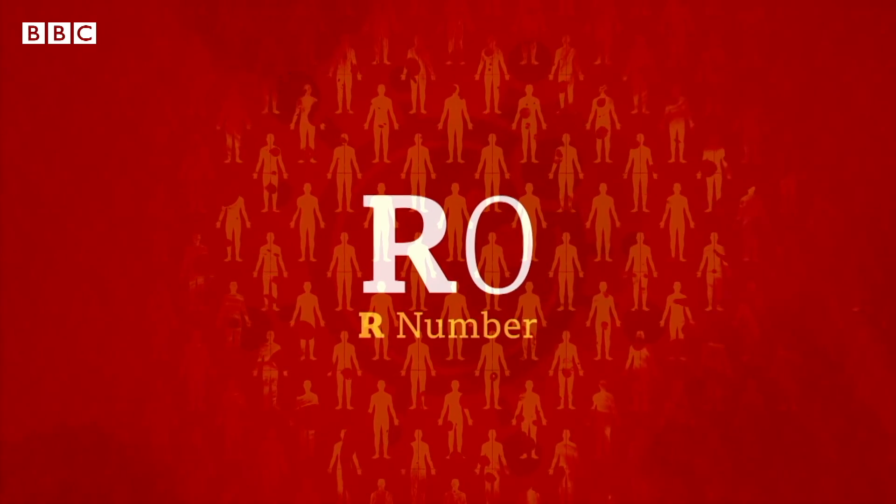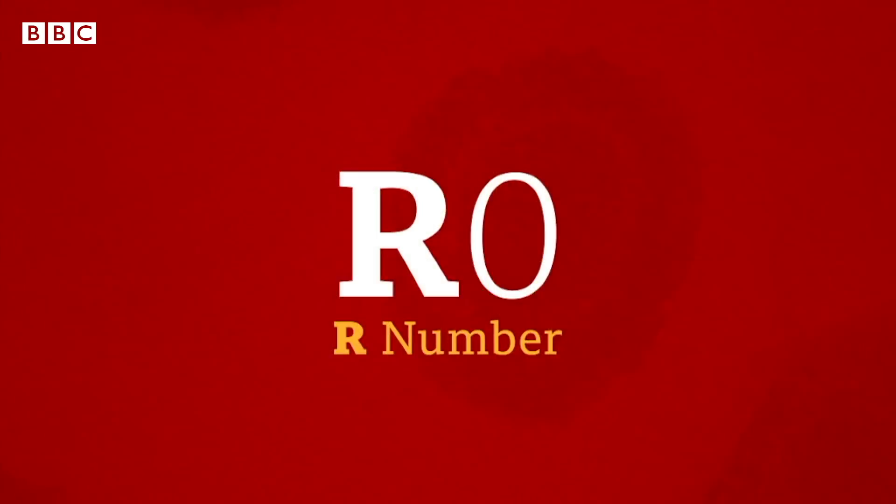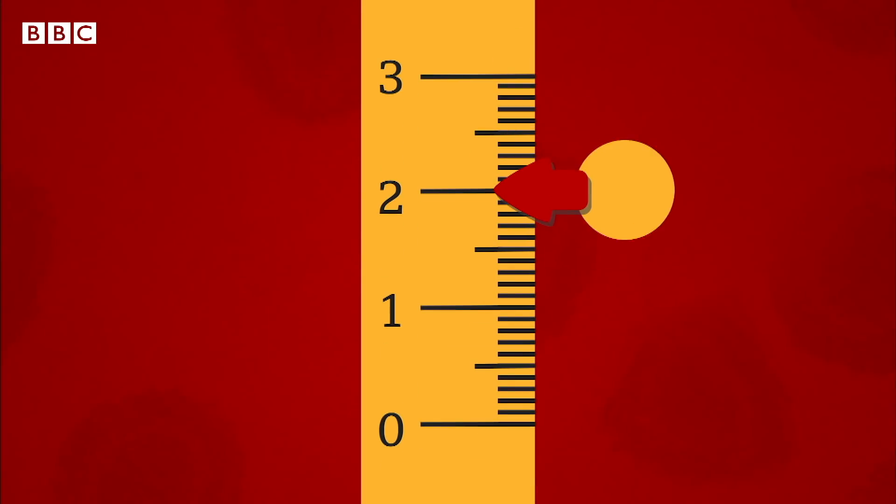It tells us how many people will likely get infected for every one person who gets ill with coronavirus. If the reproductive number is two, then one person will probably make two others sick. And so the disease spreads.